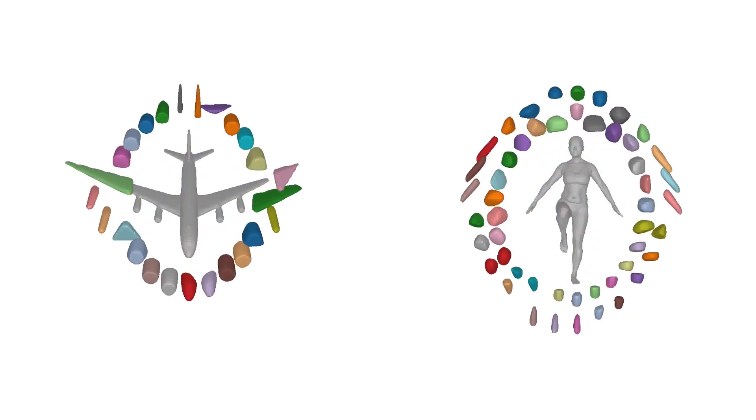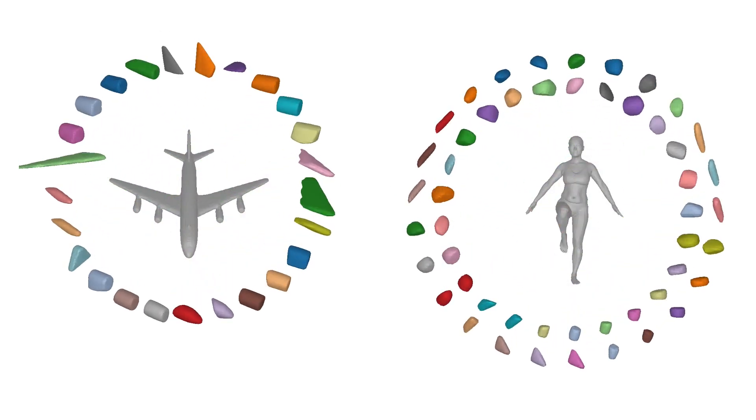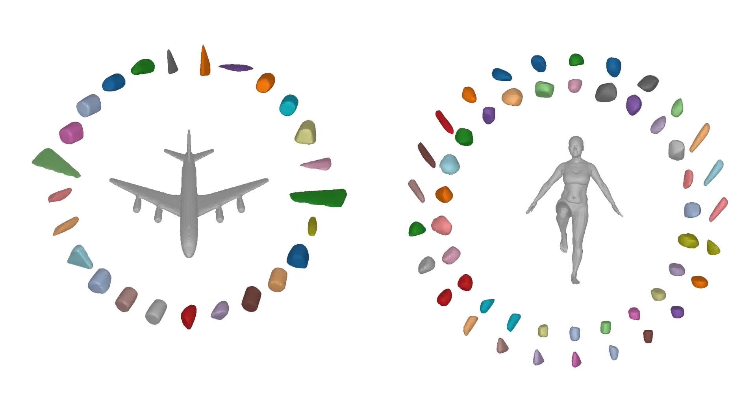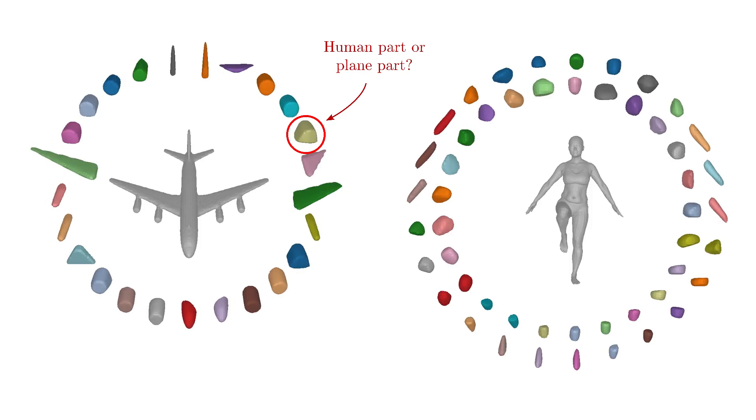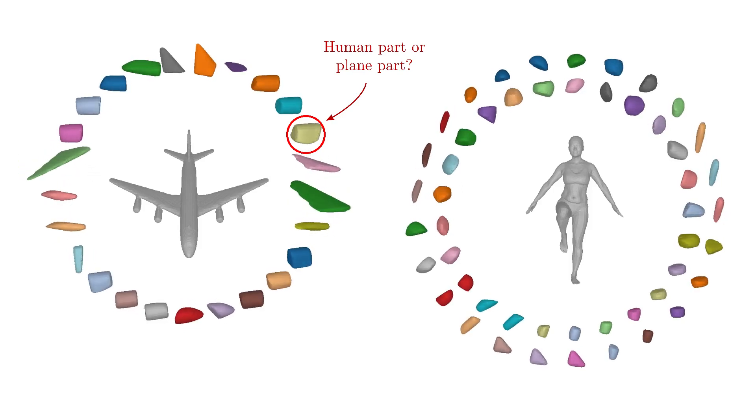For example, primitive-based reconstructions with 50 convexes result in accurate reconstructions. However, it is not possible to identify whether this part corresponds to a human part or a plane part.